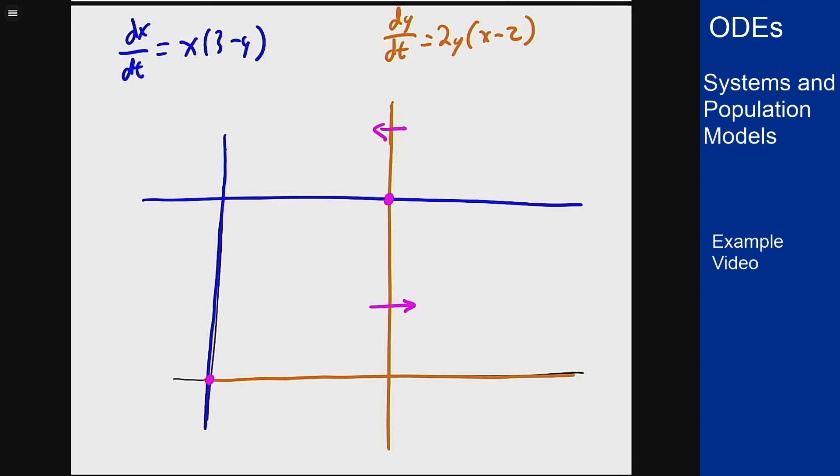The same idea happens if you look along the x nullclines. In that case, we have that y is 3, so this term here is 0. If x is less than 2, then this will be negative, so it's going down. And if x is bigger than 2, it's positive, so we're going up.